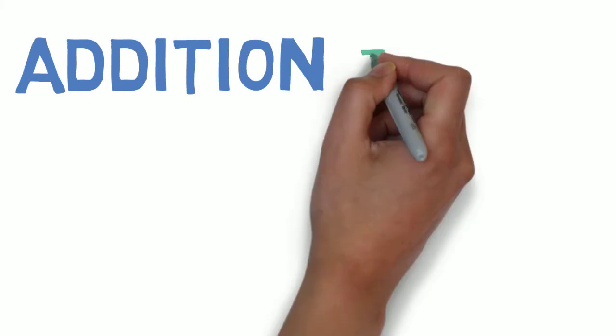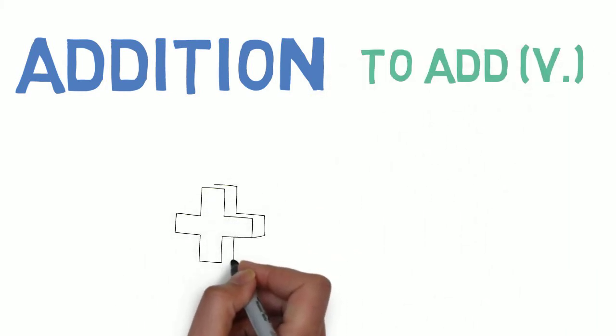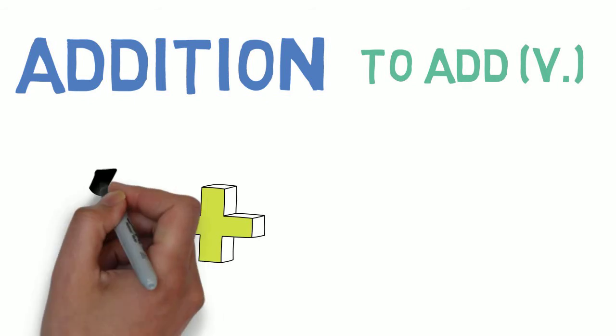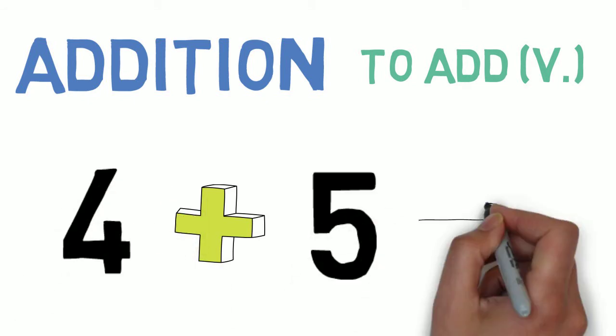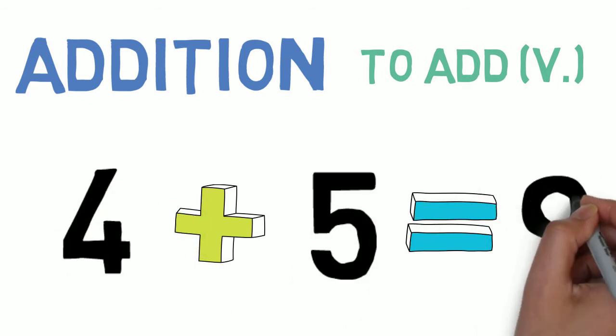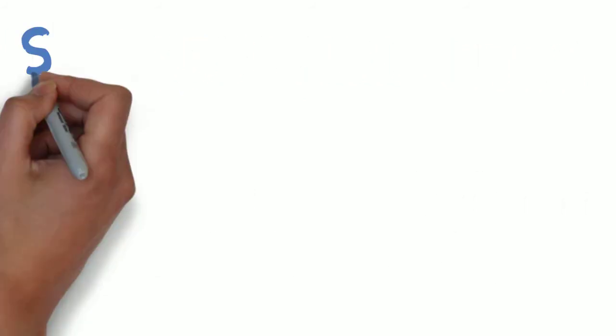Addition is when you add two numbers together. This is called a plus sign. So, for example, 4 plus 5 equals 9. Or, if I have 4 and add 5, I get 9.